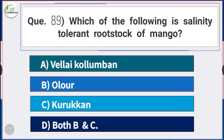Question number 89: Which of the following is a salinity-tolerant rootstock of mango? Answer is option D — both B and C — Olour and Kurukan are salinity-tolerant rootstocks of mango.